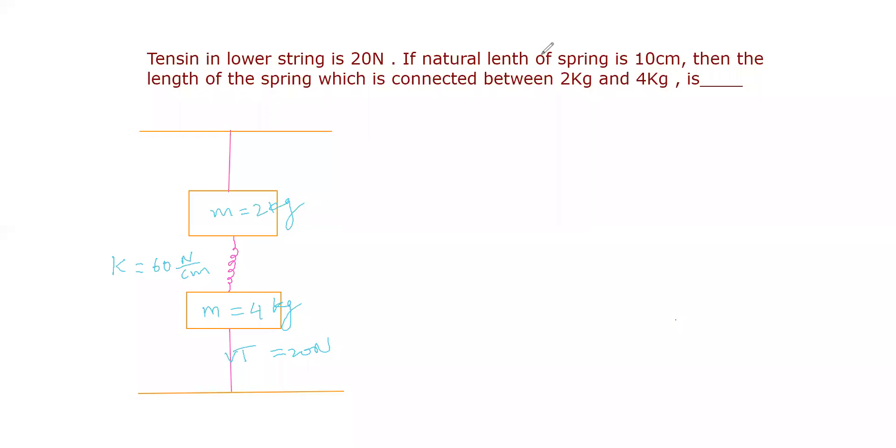Now we are going to solve a conceptual problem. Tension in the lower string is 20 newton. If the natural length of the spring is 10 centimeters, then the length of the spring which is connected between 2 kilogram and 4 kilogram is ___.